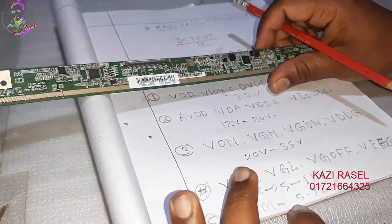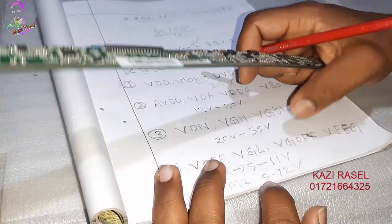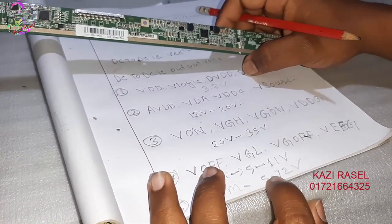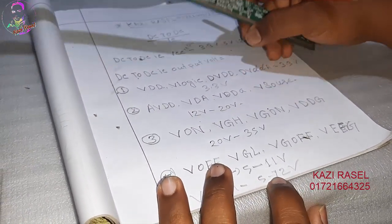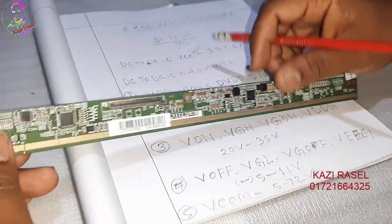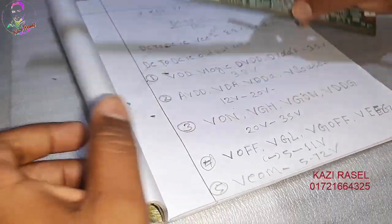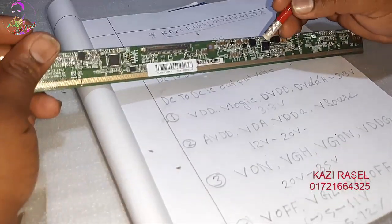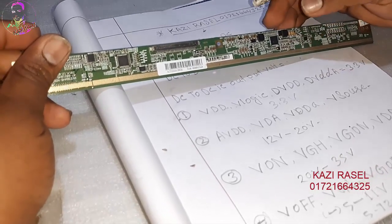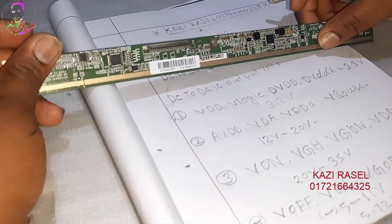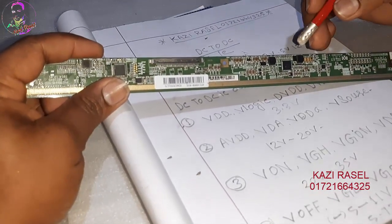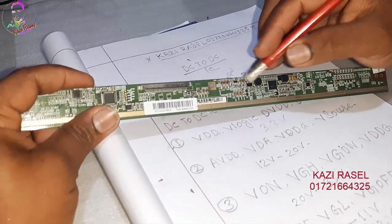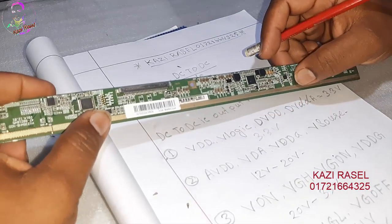This voltage is minus 5 volts. The voltage details will be checked — we will see the details of the channel.